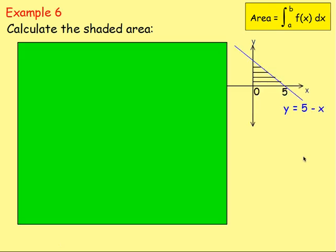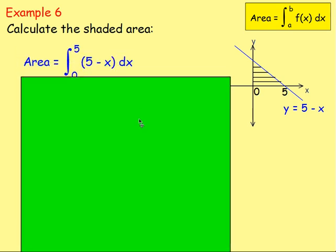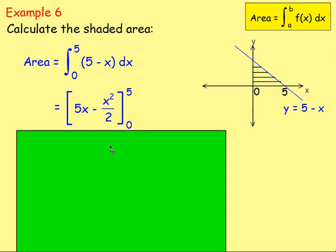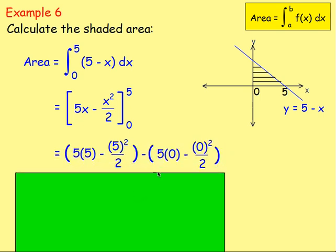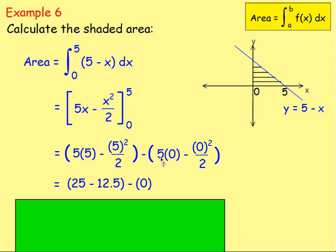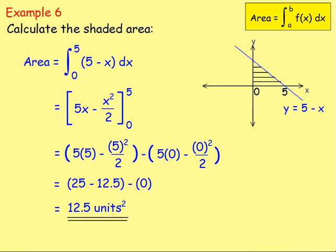Example six: calculate the shaded area. We have y equals 5 minus x. Integrate 5 minus x — remember it has to be in the form y equals. The lower limit is 0 and the upper limit is 5. Bring in the square brackets: integrating gives 5x minus x squared over 2, with limits 5 and 0. Substitute in: (5×5 − 5²/2) minus (5×0 − 0²/2). That gives 25 minus 12.5 minus 0, which equals 12.5 square units.